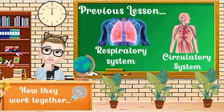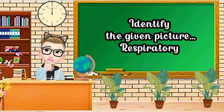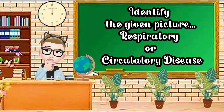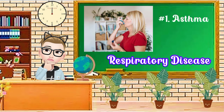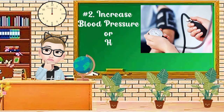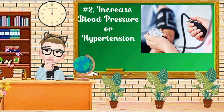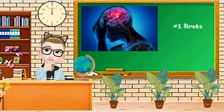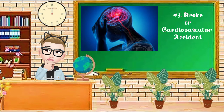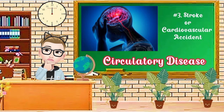To learn more about our lesson for today, you are expected to identify the given picture whether it is a respiratory or circulatory disease. Number one: asthma — correct, it's a respiratory disease. Number two: increased blood pressure or hypertension — correct, it's a circulatory disease. Number three: stroke or cardiovascular accident — correct, it's a circulatory disease.